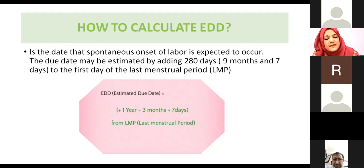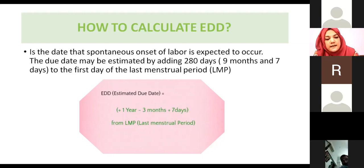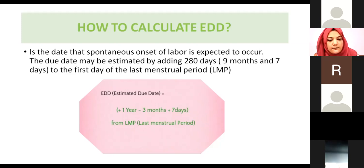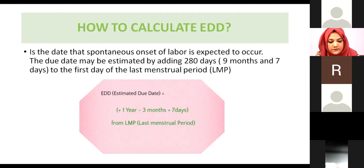There are two methods to calculate the expected date of delivery. First, from the first day of the last menstrual period, count forward nine months, which equals a total of 280 days. Second, from the first day of the last menstrual period, subtract three months, then add one year and seven days — that gives you the expected date of delivery.